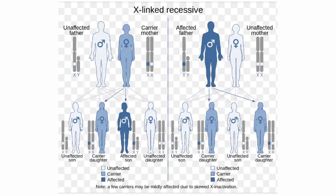Regarding recurrence risk: for X-linked recessive traits, females have two X chromosomes while males have one. For a female to be affected, both X chromosomes must be defective; for a male, only one. If the mother is a carrier, there is a 50% chance each son will be affected and daughters will be carriers only. Sons have a 50% chance of being diseased.